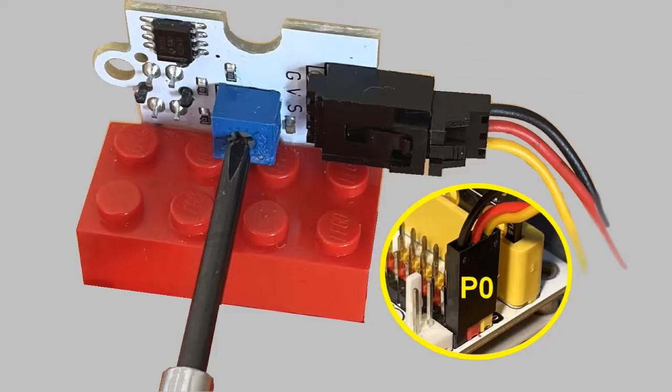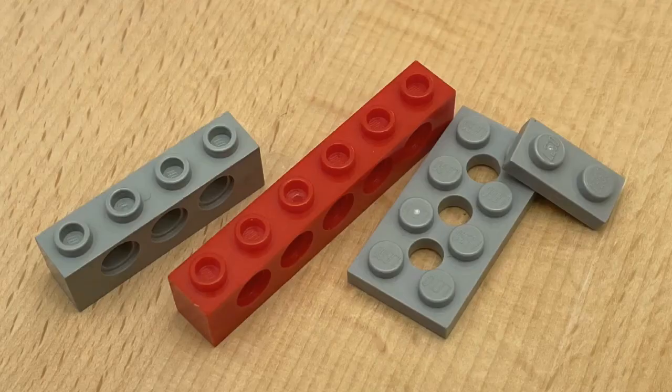You adjust it by connecting it to P0 on the motor board and letting it point out into the room. Then you turn the trimmer so that the little red LED just lights up. The sensor can be mounted on a gearbox in this way.